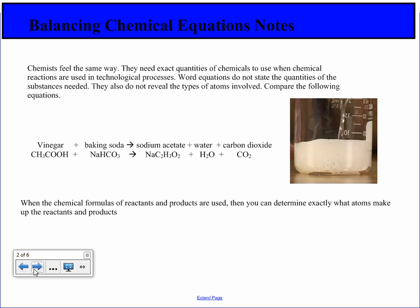Chemists feel the same way. They need exact quantities of chemicals to use when chemical reactions are used in technological processes. Word equations do not state the quantities of substances needed. They also do not reveal the types of atoms involved. Compare the following equations: